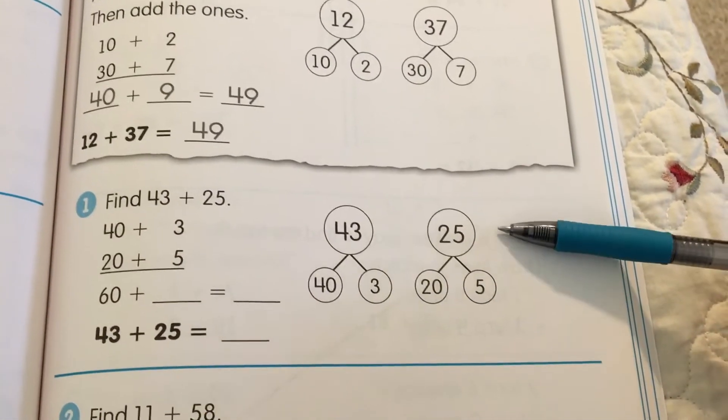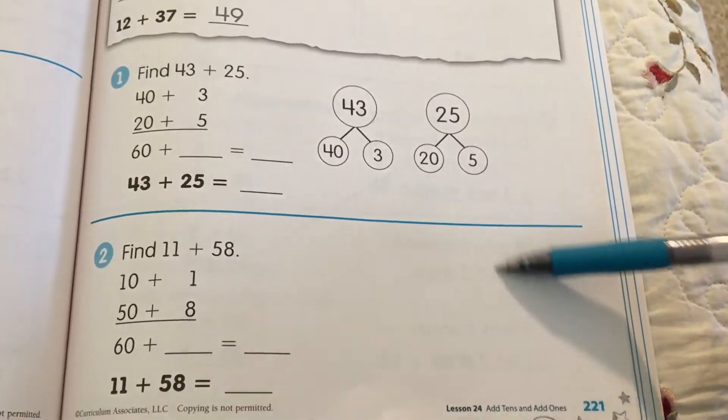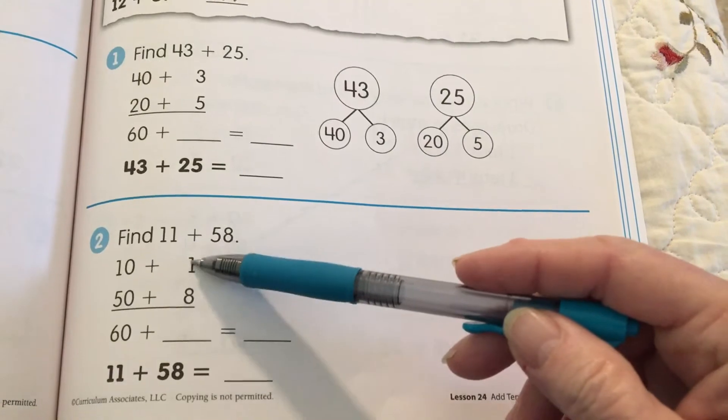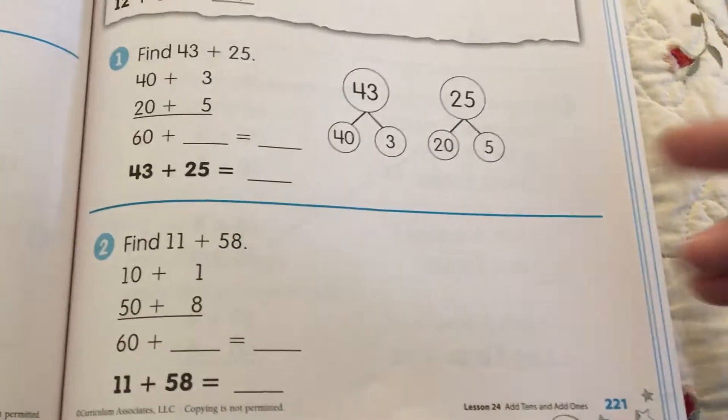Same thing here. Add up your 1's first. Here you're going to draw your number bond for 10 plus 1, 11, and 58. Draw your number bond first.